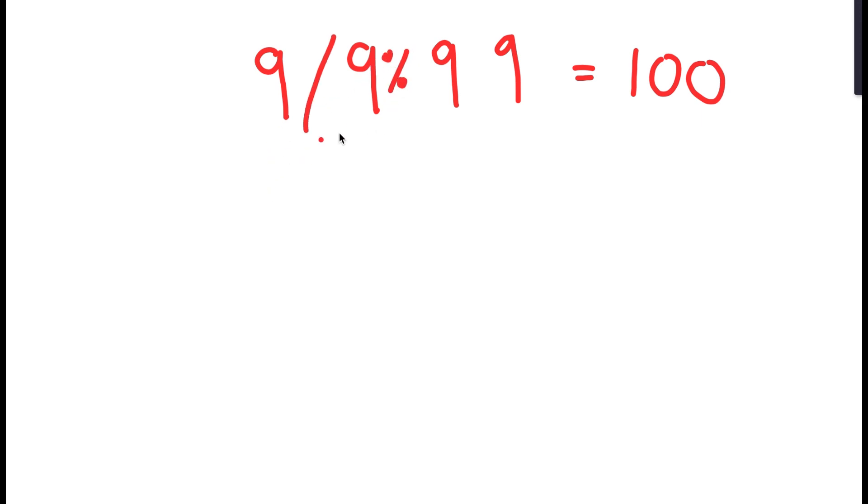And then we can multiply this by 9 divided by 9, which is 1. So 100 times 1 is 100, so this also makes 100.